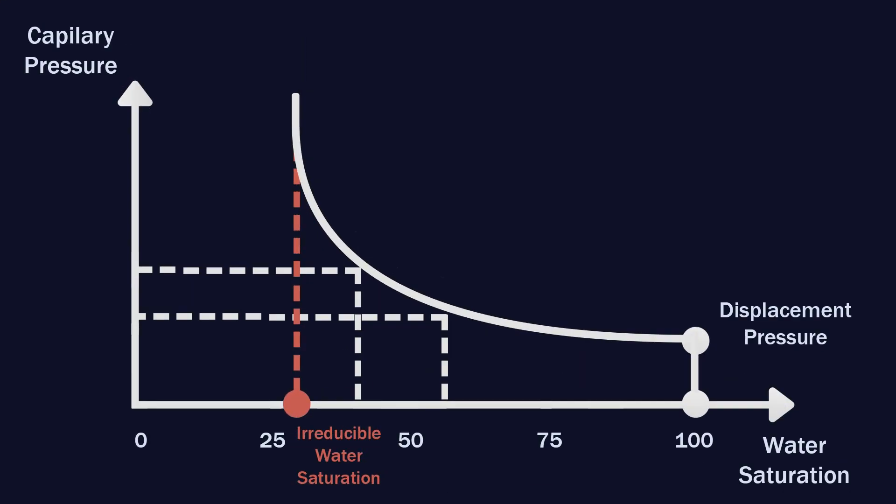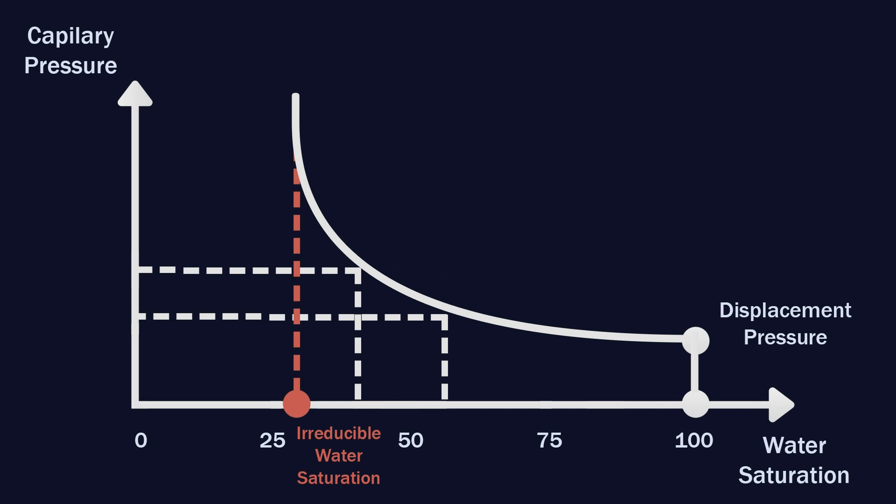Capillary pressure curve can be transformed into a height-saturation relation by converting capillary pressure scale into height scale. Since Pc equals ρgh, h equals Pc over ρg. By this conversion, we can relate various depths with oil-water saturation.